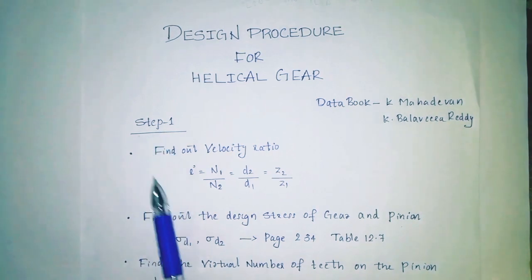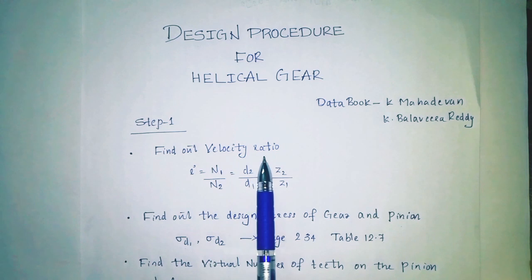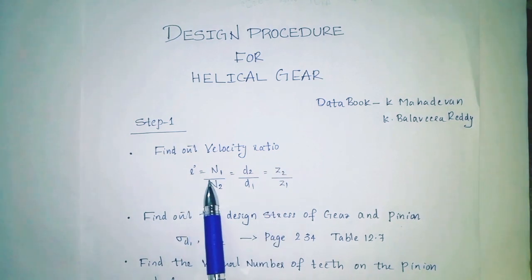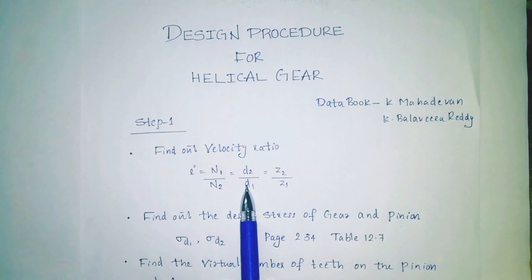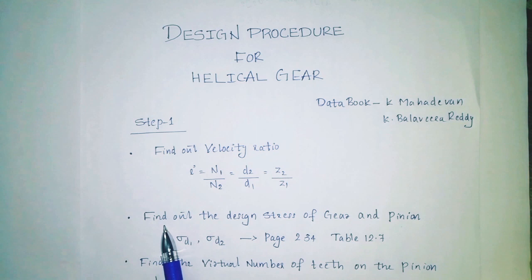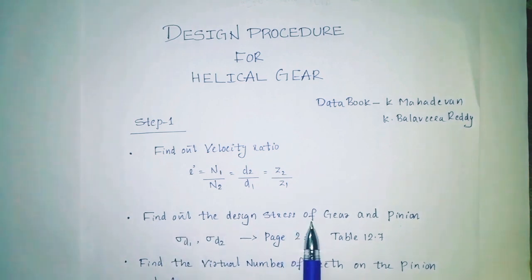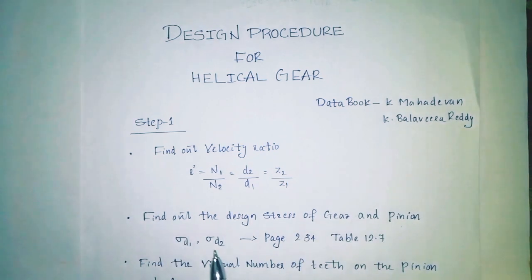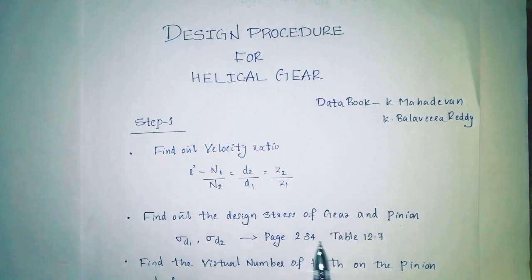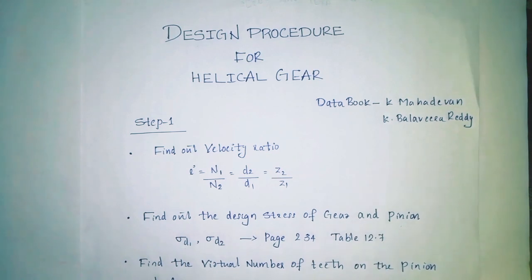Step 1: Find out velocity ratio. i is equal to N1 by N2, equal to D2 by D1, equal to Z2 by Z1. Find out the design stress of gear and pinion. Design stress is from page number 234, table 12.7.